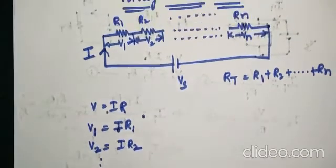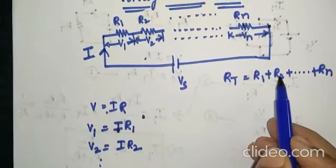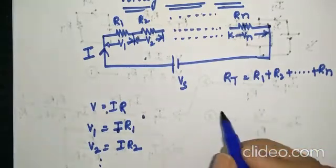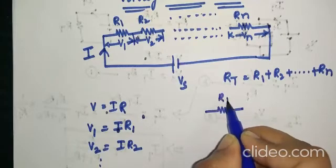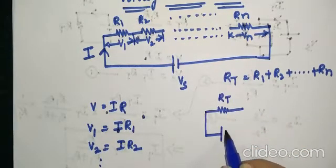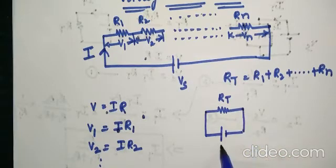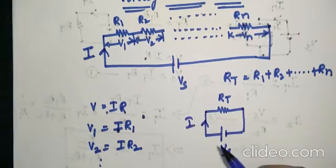Since all the elements are connected in series, the total resistance will be R1 plus R2 and so on, Rn. Instead of all those resistors, we can replace that with simply Rt. Then the circuit becomes Vs and I.